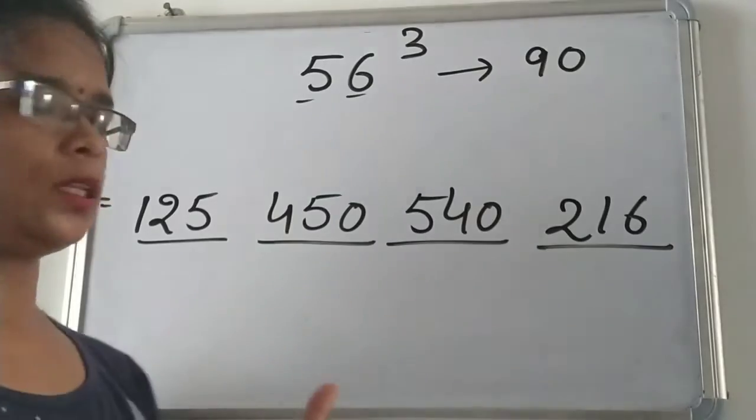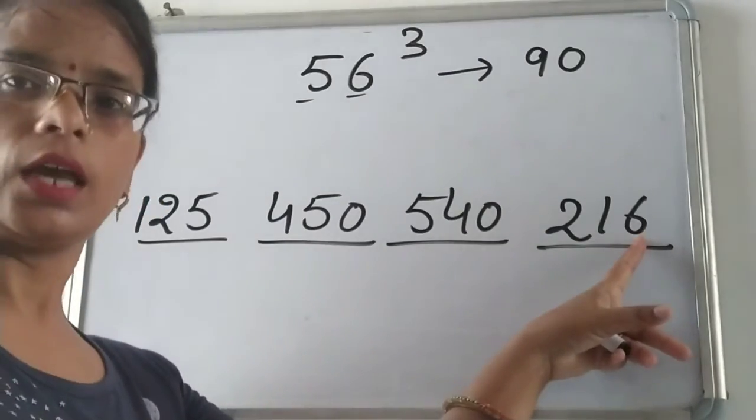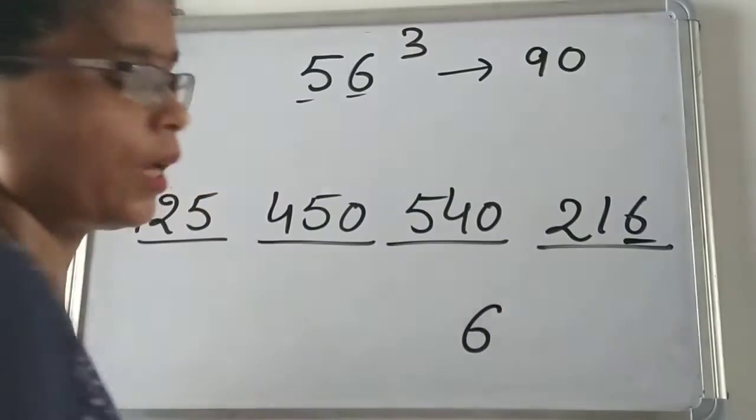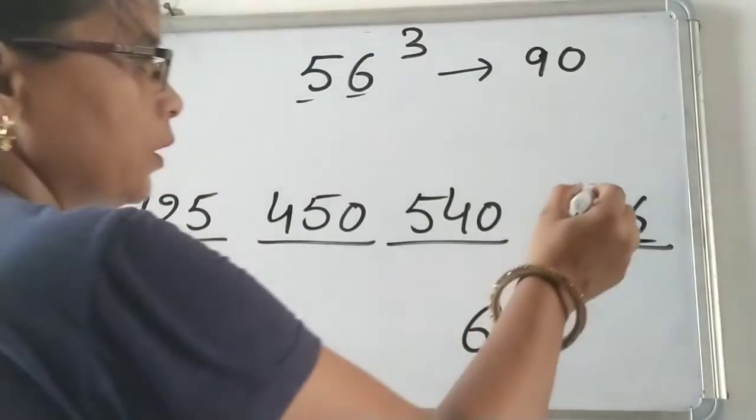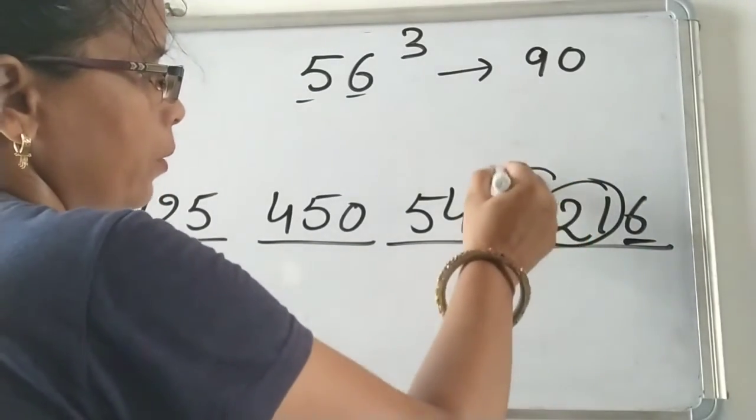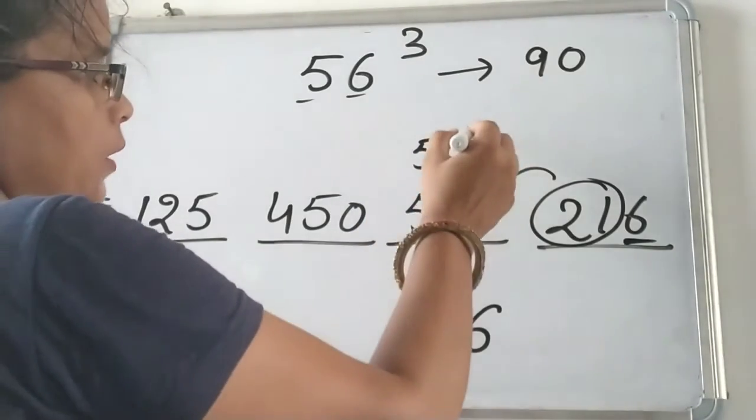Now again we will concentrate on the unit digit to find answer. So this 6 will be here in answer and this 21 will be added in this number. And we get here 561.